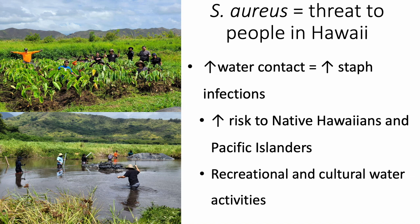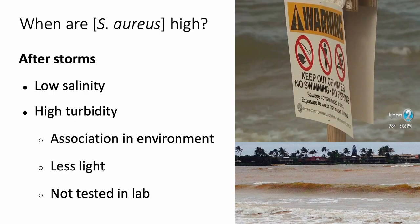Native Hawaiians and Pacific Islanders, such as ourselves, working in the lo'i, swimming — we have a higher risk of staph infections. Staph concentrations are usually high after storms, where there's low salinity and cloudiness in the water, which is the turbidity.